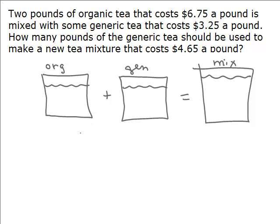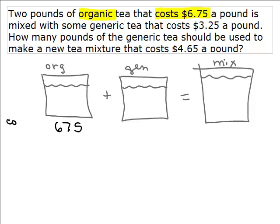Underneath each vat, I'm going to write how much it is per pound. Since we're talking about dollars and cents, I'm going to work in cents to avoid decimals. The organic tea costs $6.75 a pound, so underneath I'll write 675 cents per pound — that's the cost per pound in cents.